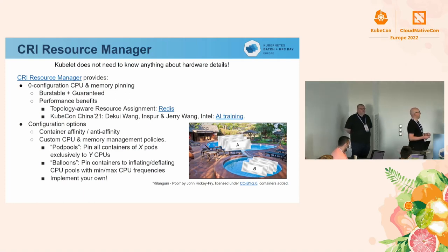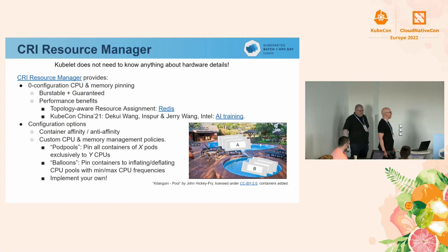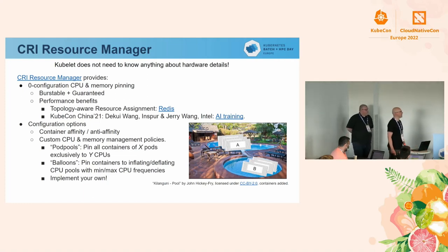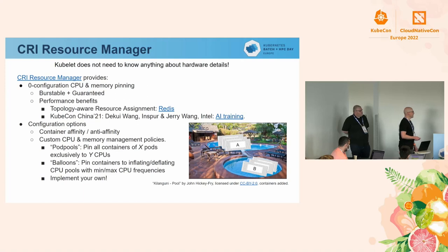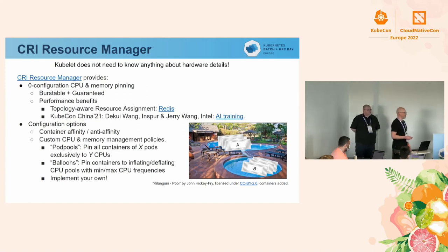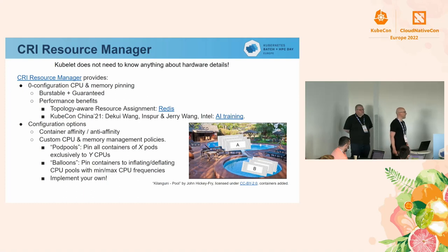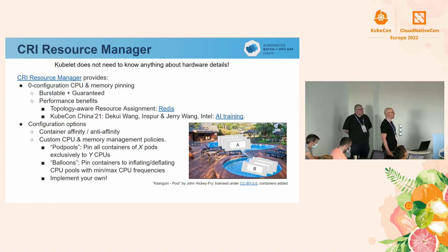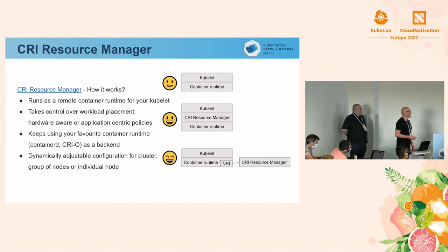CRI Resource Manager also allows defining custom resource management policies via easy APIs for creating your own resource alignment and management algorithms. For example, there's a pod pools algorithm that lets you say: I want sets of three pods to run on four CPUs, sharing CPUs among each other — something one of our customers needed, implementable in hours or days. Another example is the balloons resource management policy, where containers are pinned to CPU pools that dynamically inflate and deflate depending on resource needs, and you can also dynamically adjust CPU frequencies.